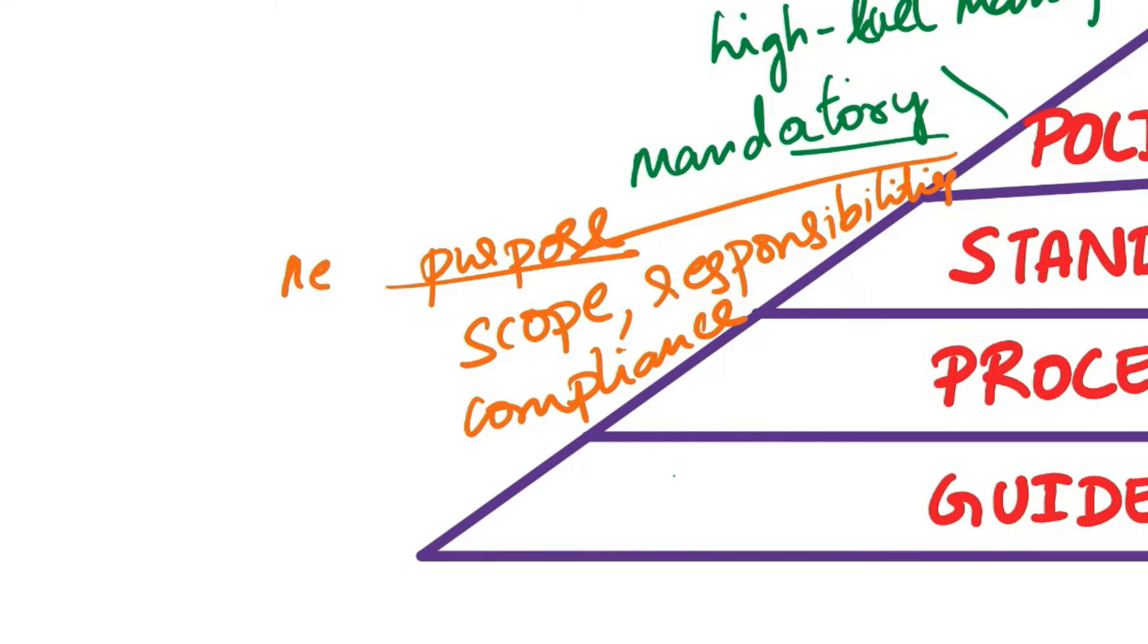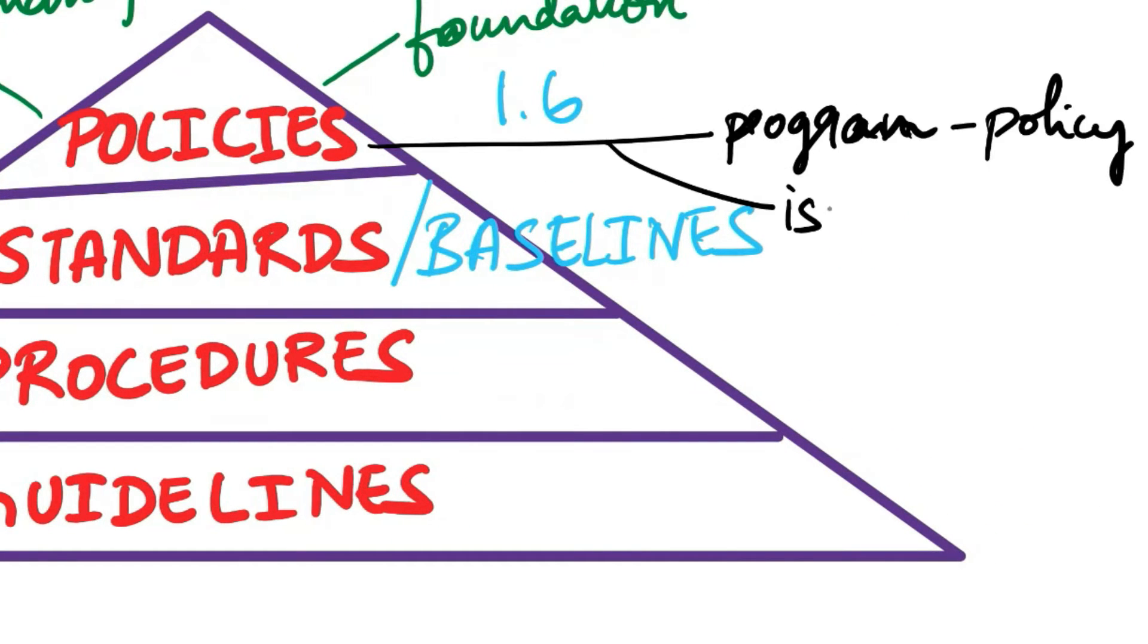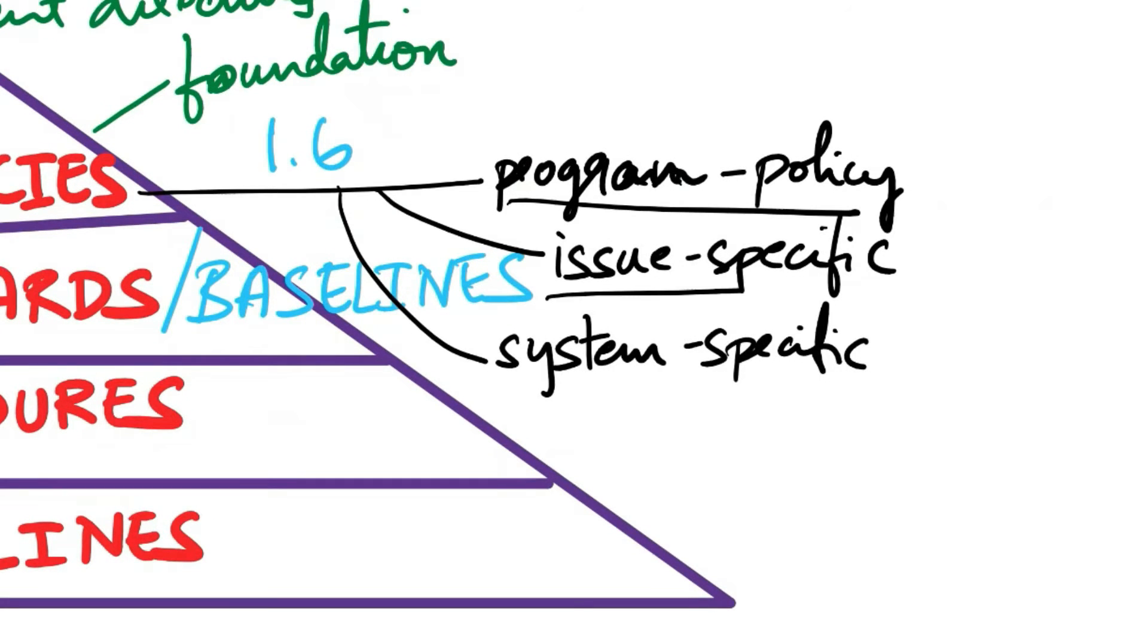The purpose describes the need for the policy. Scope outlines the covered systems and entities. Responsibilities detail the roles of individuals and teams. Compliance addresses the effectiveness of policies and consequences for violations. There are different types of policies, including program policy, issue-specific policy, and system-specific policy. Program policy establishes an organization's information security program, while issue-specific policies focus on specific security issues. System-specific policies apply decisions to actual computers, networks, and applications.